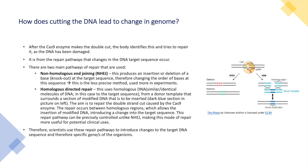There are two main pathways of repair. Firstly, non-homologous end joining produces an insertion or deletion of bases — also known as a knockout — at the target sequence, therefore changing the order of bases. This is a less precise method and is used more experimentally.